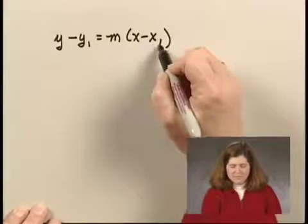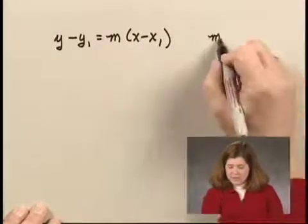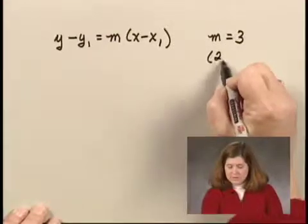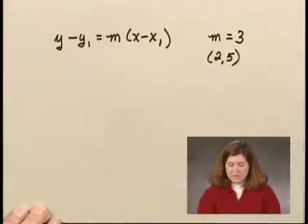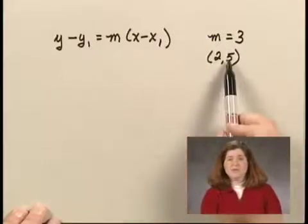Now this has the advantage of being able to substitute directly from the known slope m equals 3 and the given point 2, 5. m is 3, x sub 1 is 2, and y sub 1 is 5.